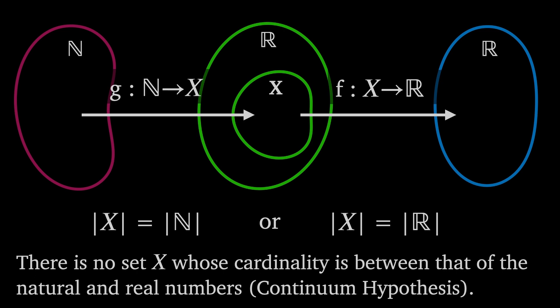That's because there's no set whose cardinality is between that of the natural numbers and the real numbers. This statement is known as the continuum hypothesis and was put forward by Georg Cantor in 1878.